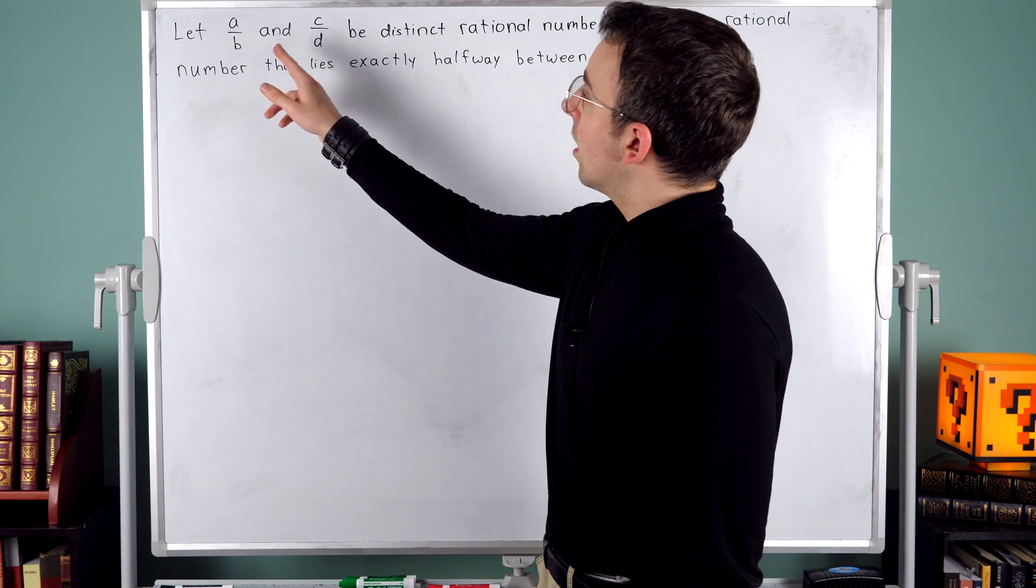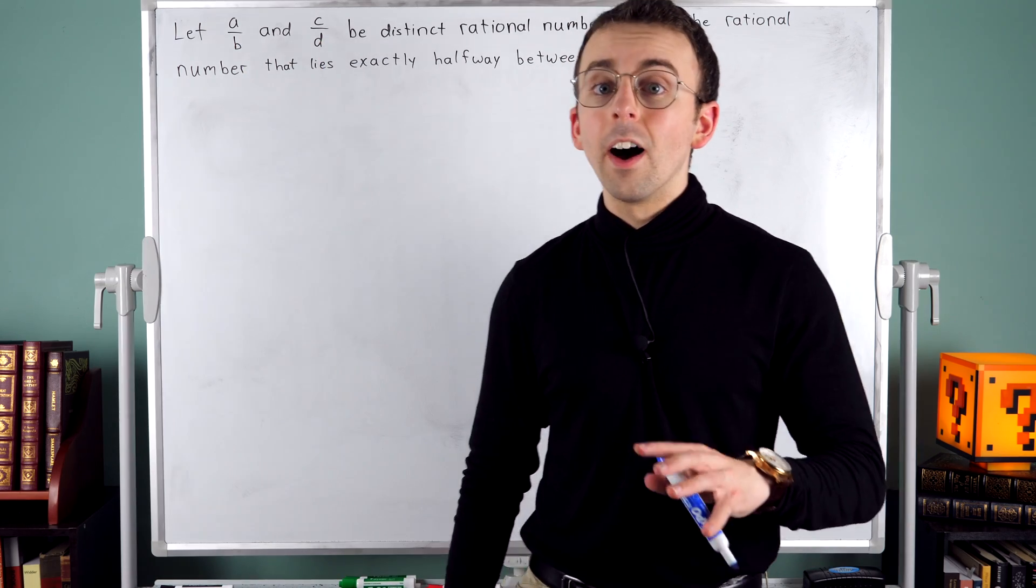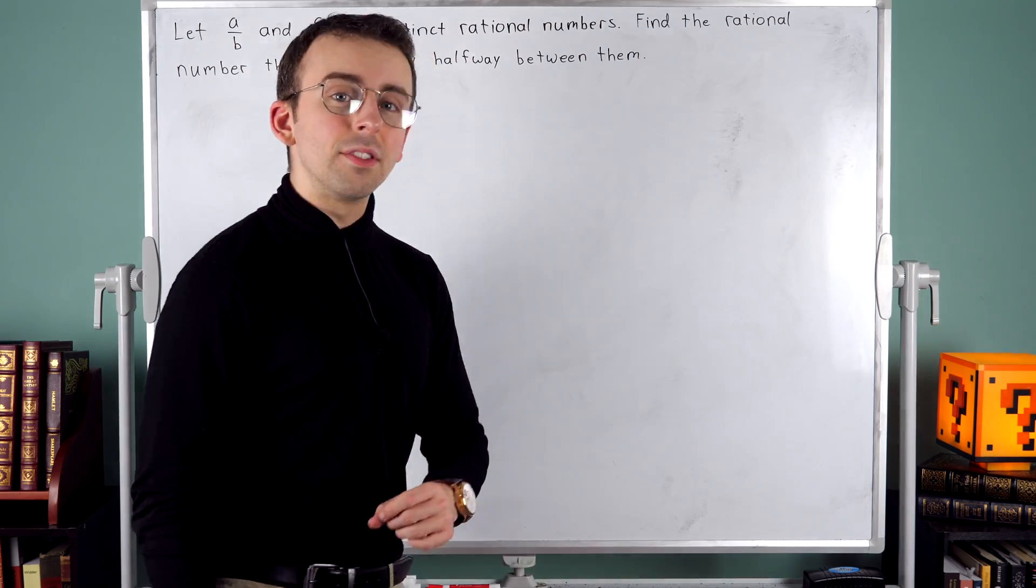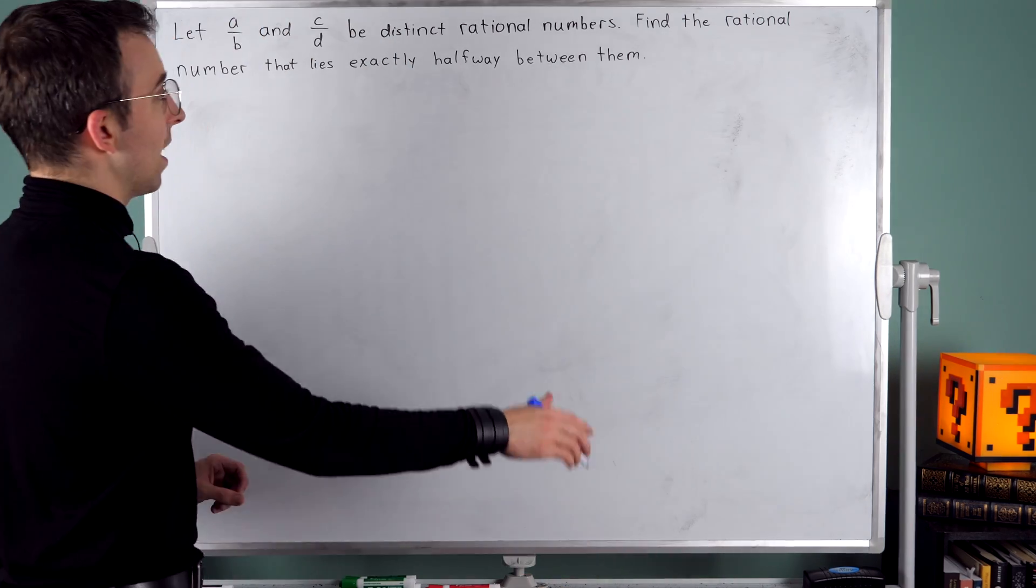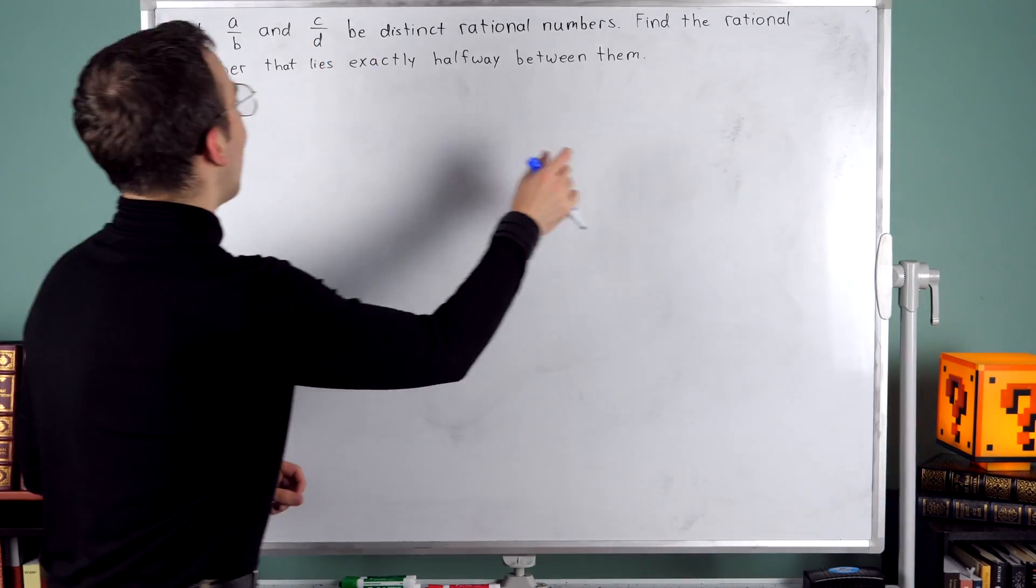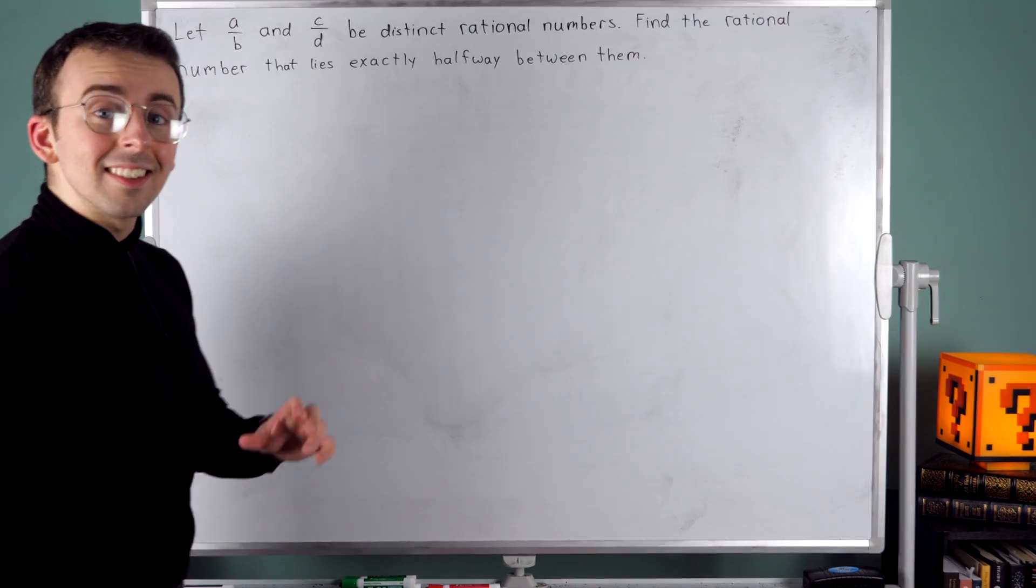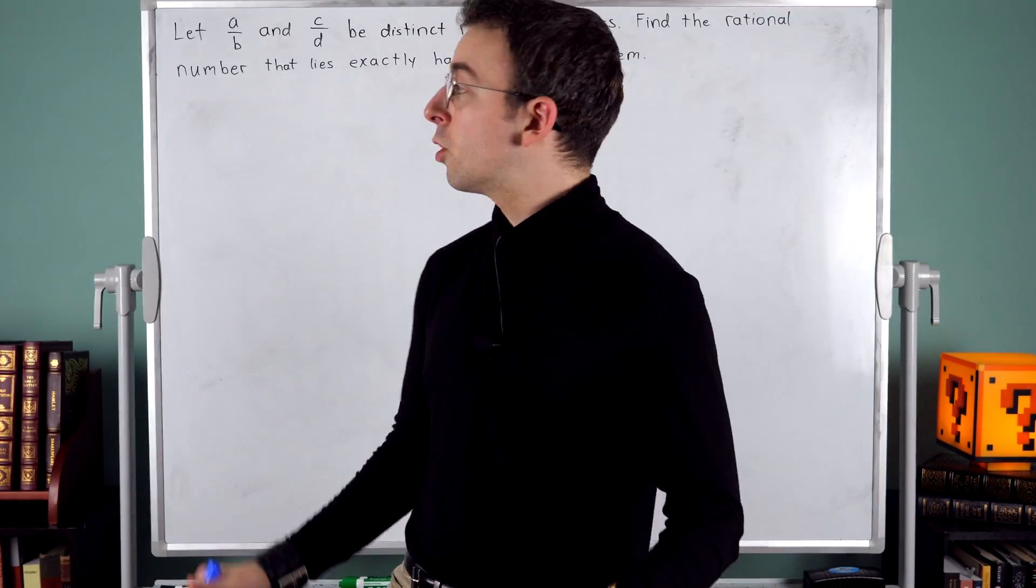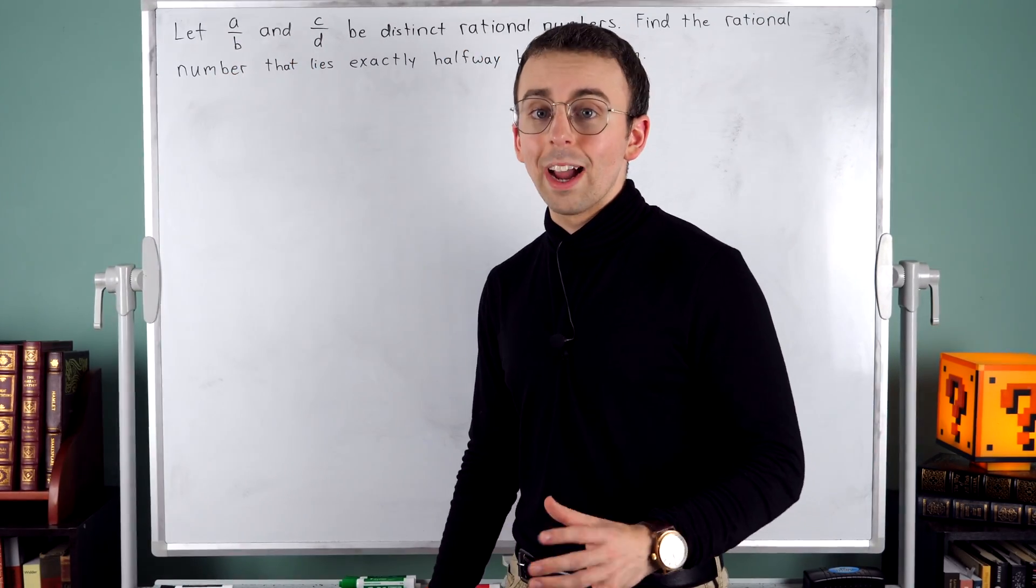So A over B and C over D are ratios of integers, and B and D are non-zero because we can't have zeros in the denominator. We're asked to find the rational number that lies exactly halfway between these two rational numbers.